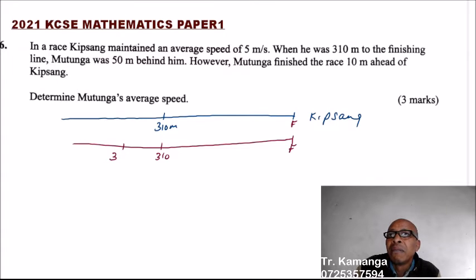So he was at, it was 360 from here to the finishing line. The finishing line. These are meters.